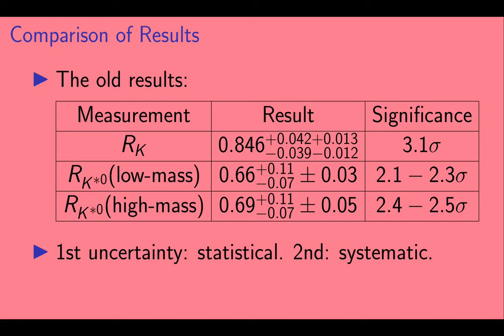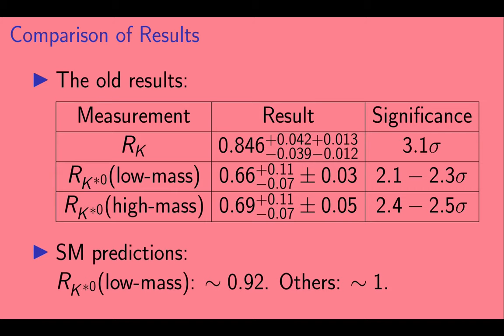Here are the old results. There is one result for RK, and there are two results for RK star. The first uncertainty quoted on each result is the statistical uncertainty, and the second is the systematic uncertainty. In the standard model, the second of these three quantities, denoted RK star low mass, has a predicted value of about 0.92. The standard model prediction for the other two quantities is essentially 1. We can see that all three measurements were low, with significances ranging from 2.1 to 3.1 sigma.